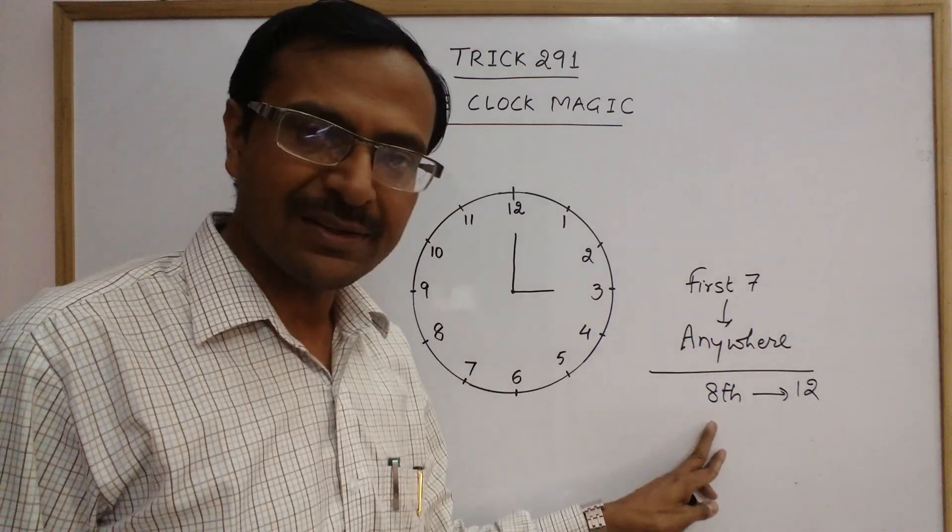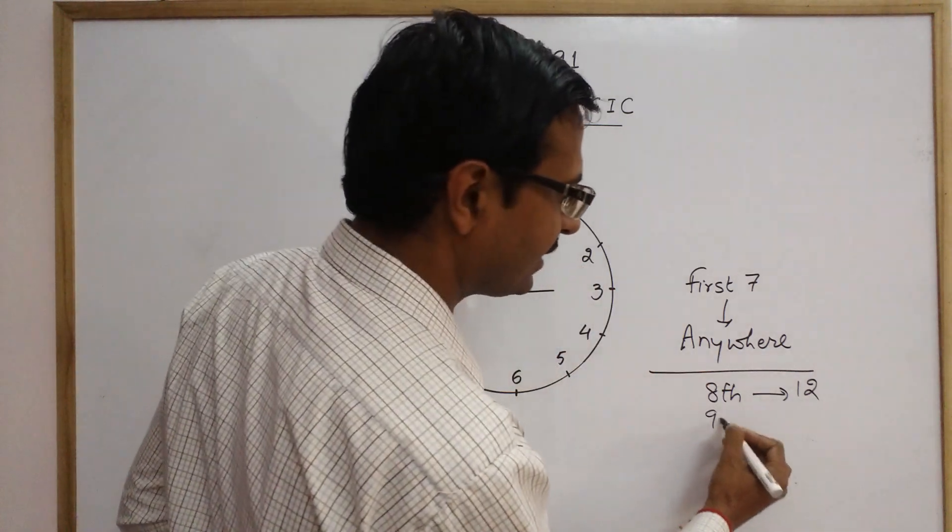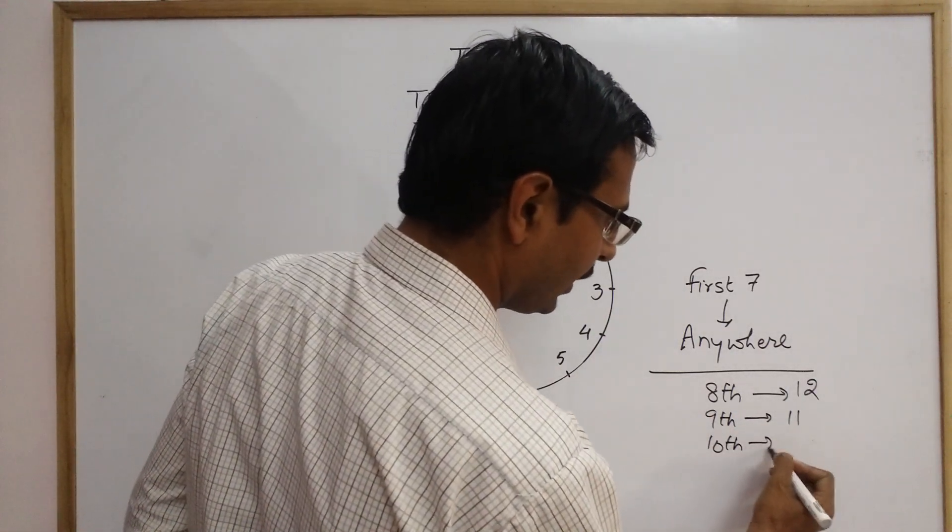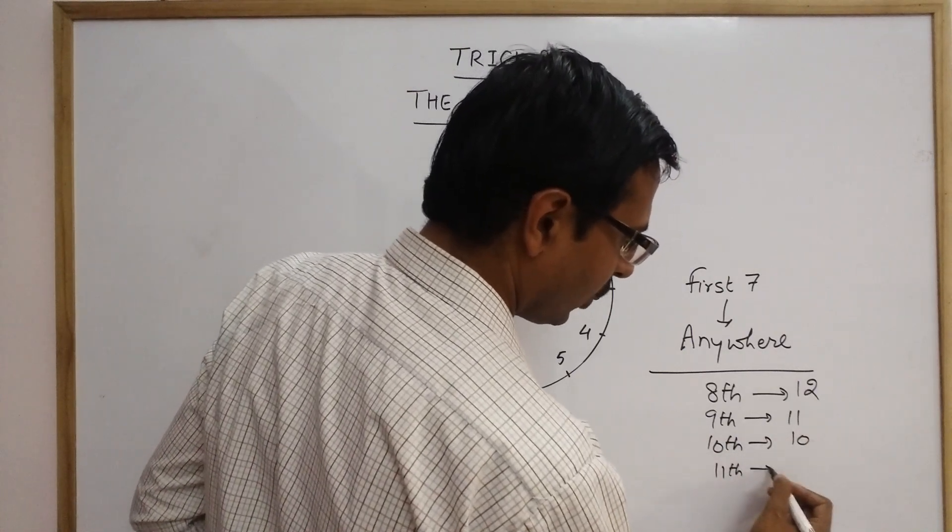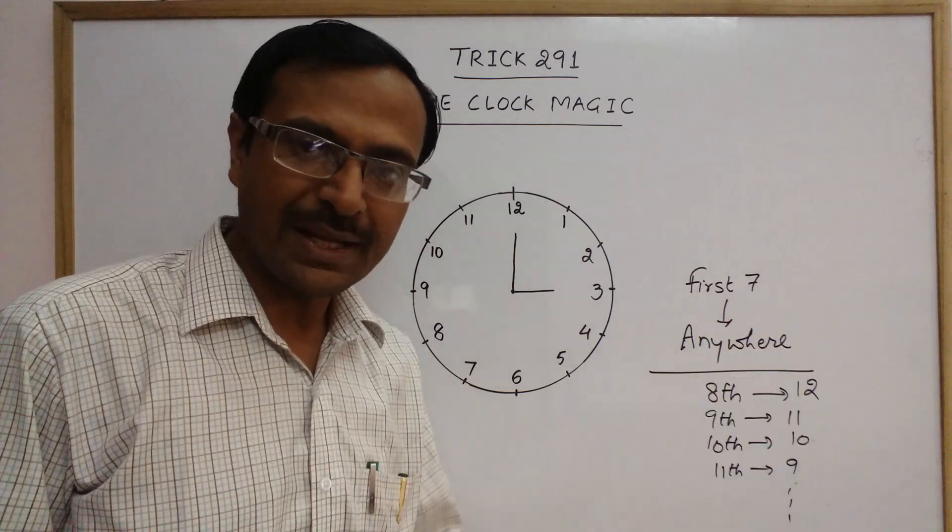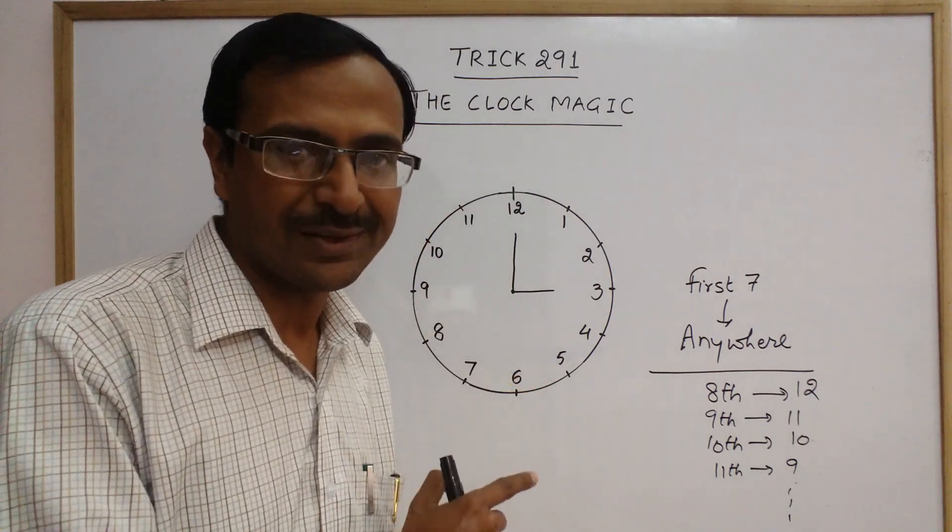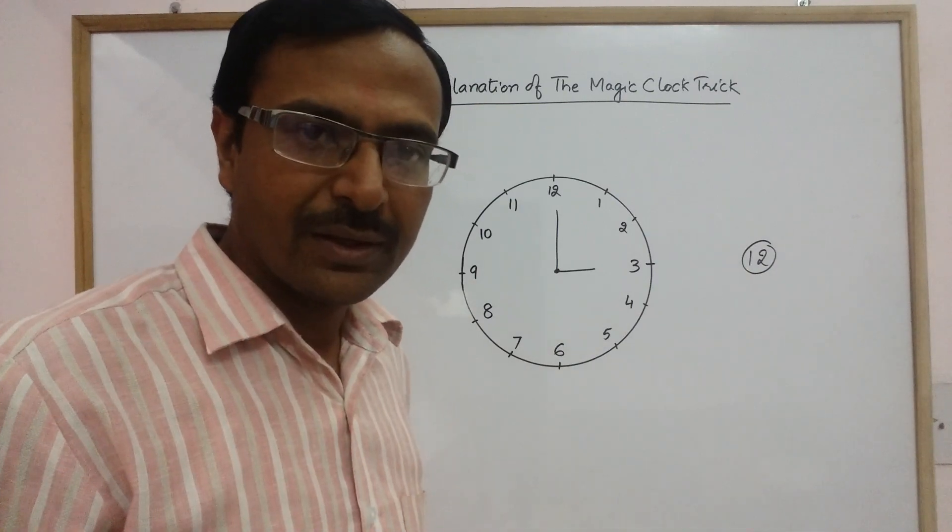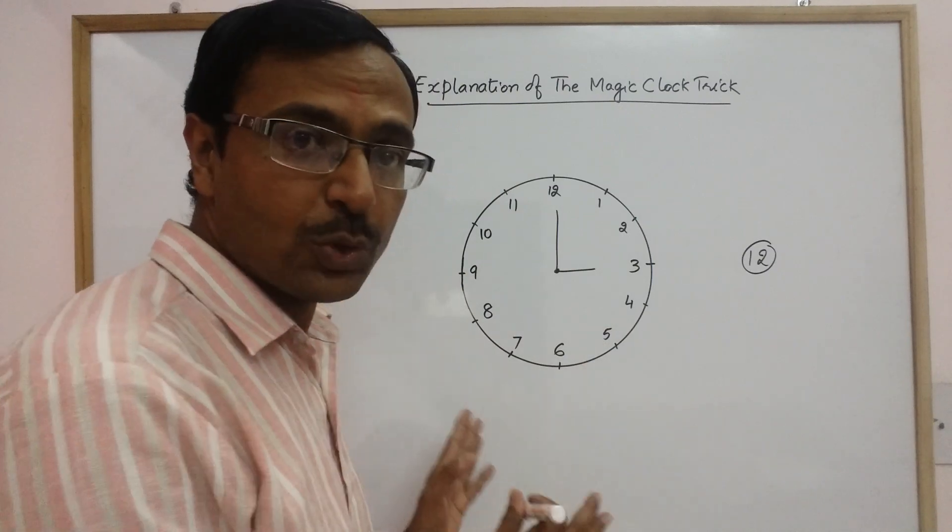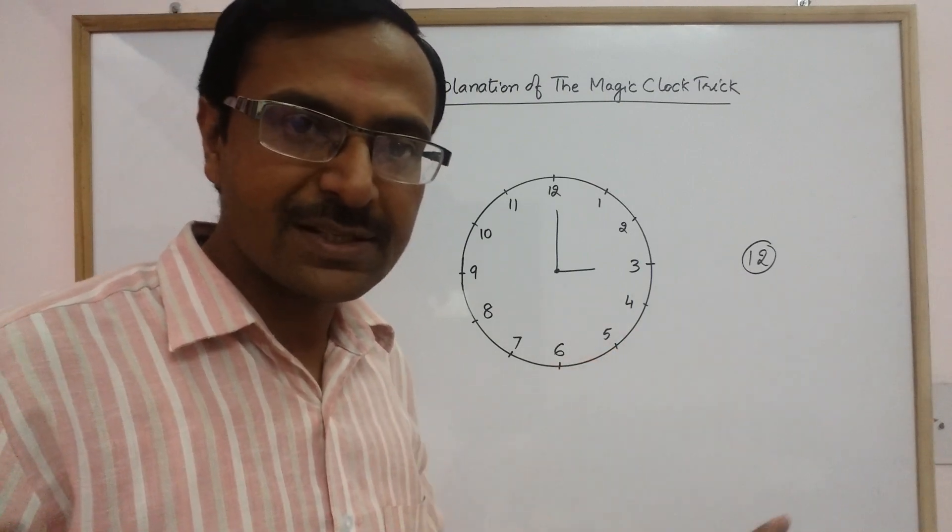Then you just move anticlockwise after this. Ninth on eleven, likewise, tenth on ten, eleventh on nine, and so on. So like this, wherever he completes twenty in his mind, you will automatically be at that number which he has thought. Now, whatever number he thinks, it may be from one to twelve, any number. But the one who is showing the magic, he will assume that the person has thought of the highest number, twelve.